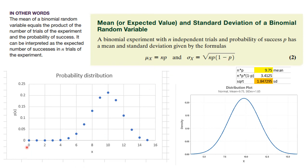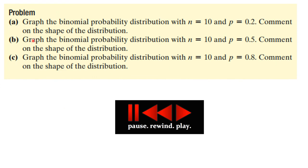If we plot X versus P(x) using a scatter plot in Excel, we get something that looks like a bell-shaped curve — though here it's skewed left. Try graphing the binomial probabilities for: n=10, p=0.2; then n=10, p=0.5; then n=10, p=0.8. Comment on the shape of the distribution in each case.